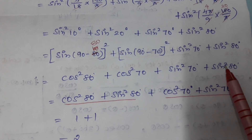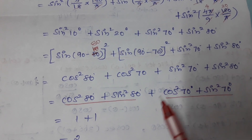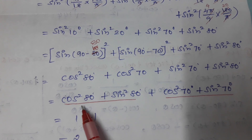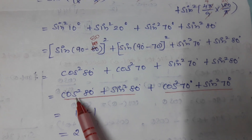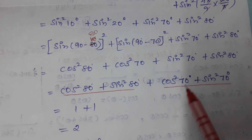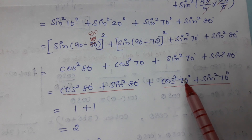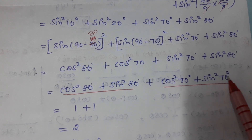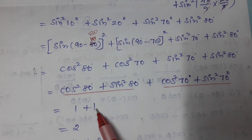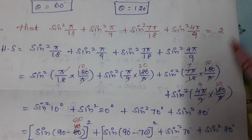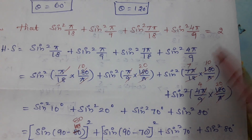So we separate and apply the identity: cos²80° + sin²80° = 1 and cos²70° + sin²70° = 1, giving 1 + 1 = 2. This proves the RHS is 2.